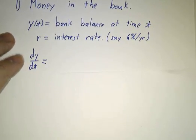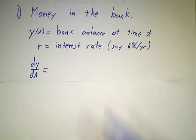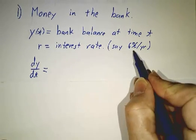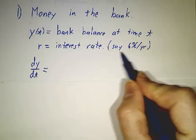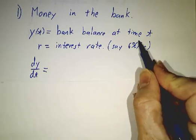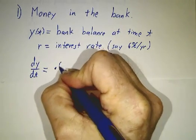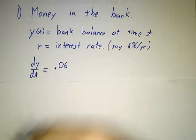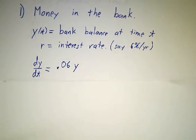And then the question is, at what rate is the amount of money changing? Well, this is the rule. The rule is that the bank is supposed to pay you money at a rate of 6% of what you have per year. So the rate at which you're adding money is 6% of whatever you have. That's the law of the bank.